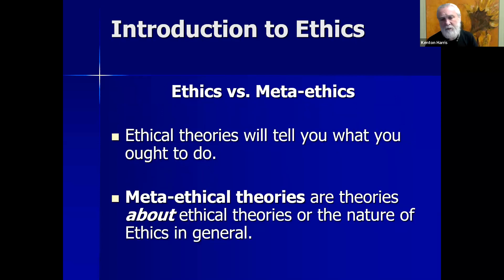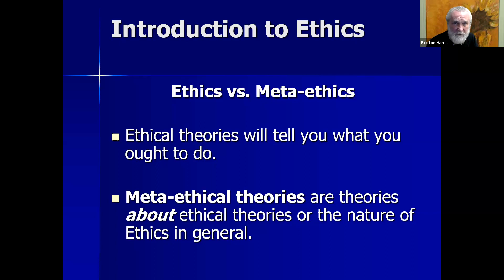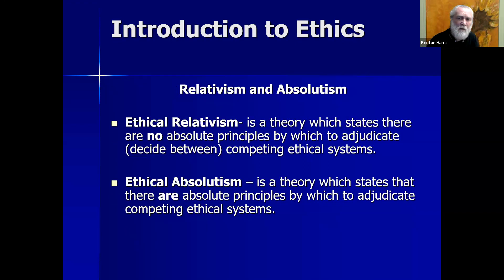Now we move to the second part: metaethics and the metaethical views of relativism and absolutism. Ethical theories are supposed to tell you what you ought to do — Kant gives you a theory, Bentham helps you figure out the right thing, Aristotle gives advice on how to live. Metaethical theories are theories about ethical theories. When I say ethical theories come in basically three varieties, that's not an ethical statement — it's a metaethical statement. I'm talking about ethical theories. Ethical relativism states there are no absolute principles by which to adjudicate competing ethical systems.